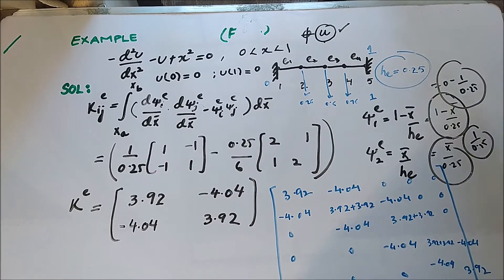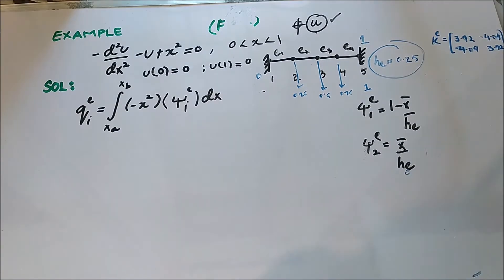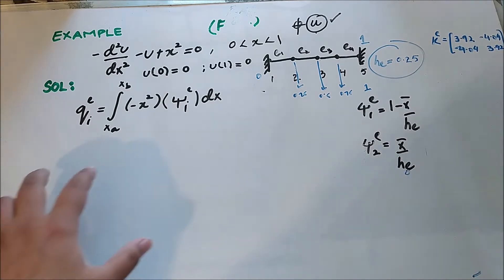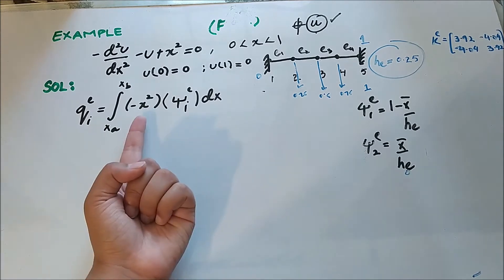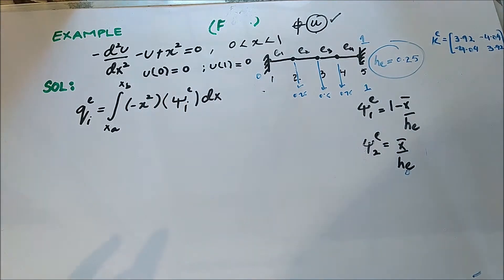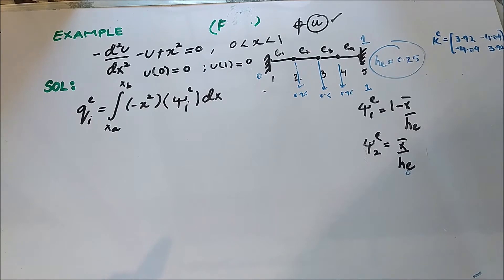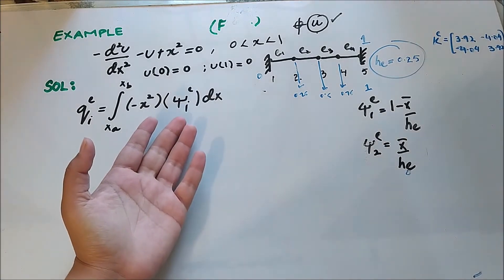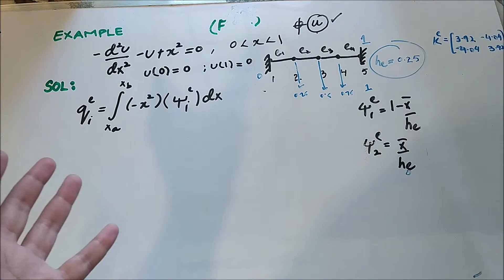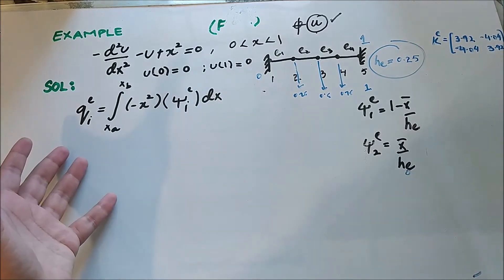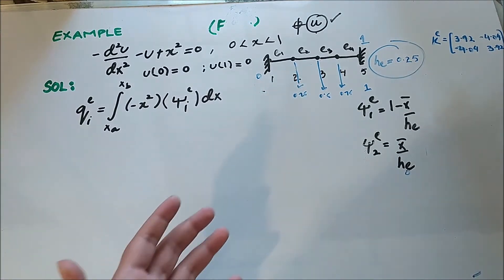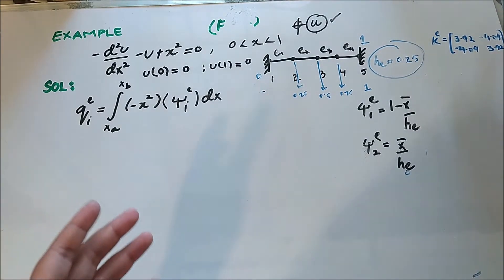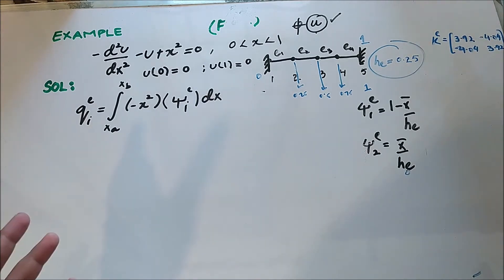Now I'll remove the stiffness matrix because the other thing we need to find is the force vector. The definition of the force vector involves an integral where -x squared is the force given in the differential equation, multiplied by Psi_i. The question is whether we can follow the same procedure as the stiffness matrix — solve for a single element and then assemble — to get the global force vector.